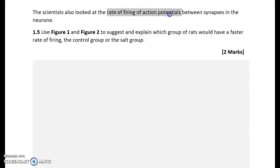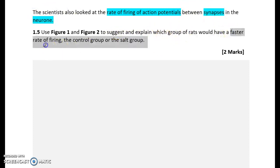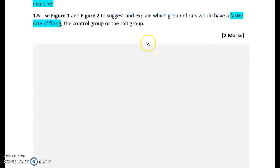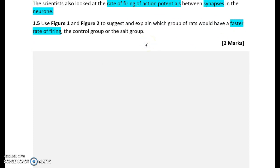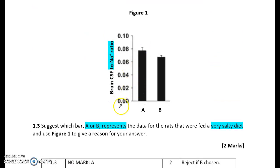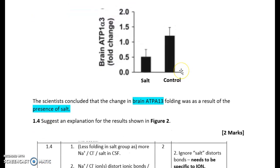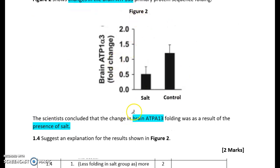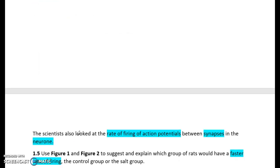The scientists looked at the rate of firing of action potentials between synapses in the neuron. Use figure one to suggest and explain which group of rats would have a faster rate of firing - the control group or the salt group. Looking back at figure one, we know the salt rats (A) have more cerebrospinal fluid relative to sodium than B. And from figure two, the salt group has less ATP1-alpha-3 folding, therefore less sodium-potassium pump activity.